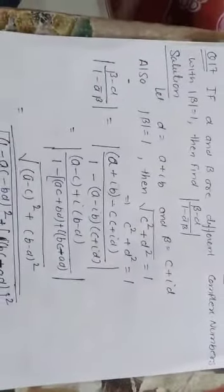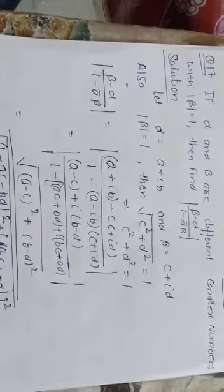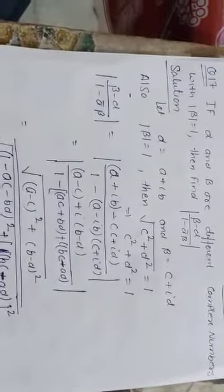Good morning friends. If alpha and beta are different complex numbers with magnitude of beta equal to 1, then find the magnitude of (beta minus alpha) upon (1 minus complex conjugate alpha into beta). This key value we need to find out.